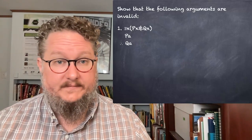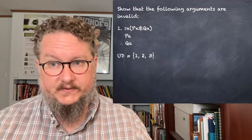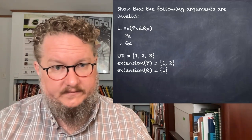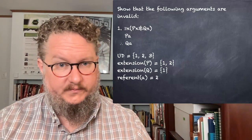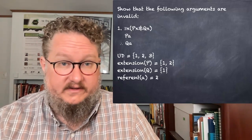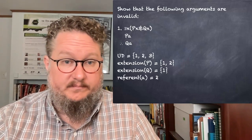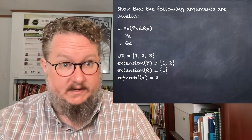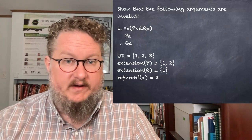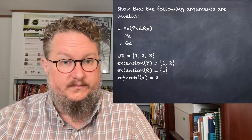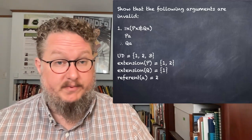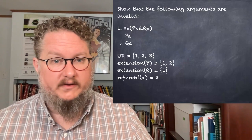For the first invalid argument example: I'll pick a universe of discourse with three numbers — one, two, and three. The extension of P includes one and two; the extension of Q includes one; and the referent of A is two. Looking at the premises: ∃x(Px ∧ Qx) is true because number one is in both extensions. PA is also true because two is in the extension of P. But QA is false because two is not in the extension of Q. Both premises are true but the conclusion is false, so the argument is invalid.